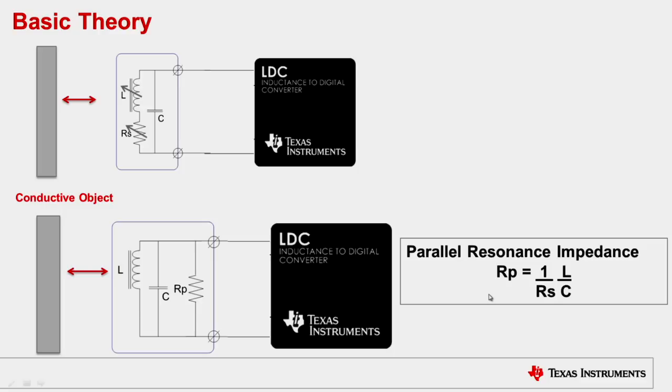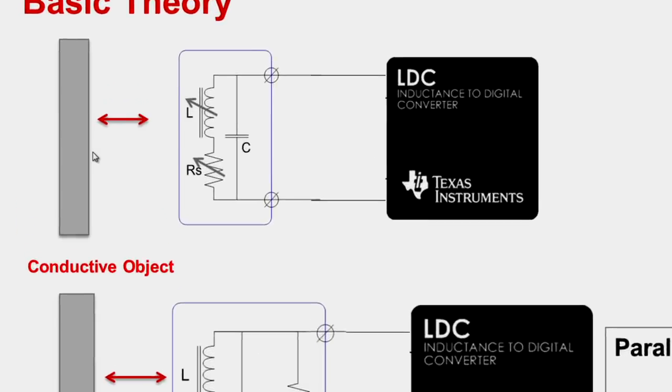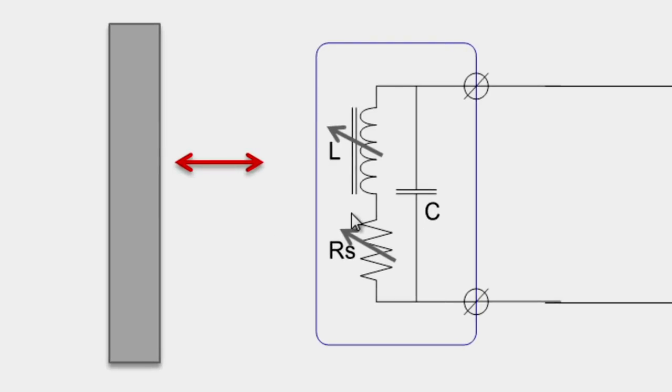If you look at LDC1000, the sensing coil interacts with the conductive object. When a conductive object moves within the magnetic field of this inductor, there is a variation in the inductor and there is a variation in the series resistor.